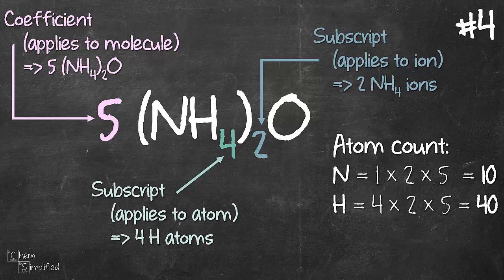O, there's no subscript, but because there's a 5 in front, we have 1 times 5 equals 5 Oxygen atoms. Our grand total comes up to be 10 plus 40 plus 5, and that gives 55 atoms.